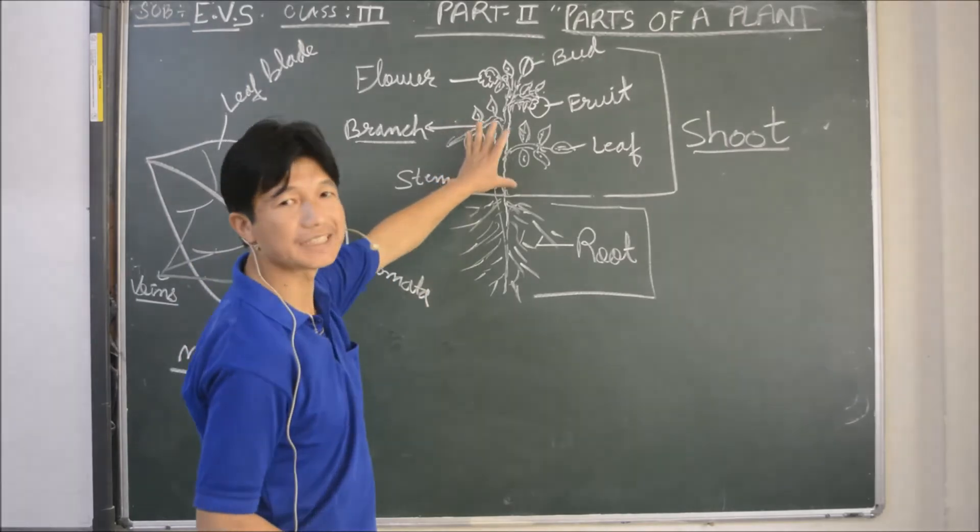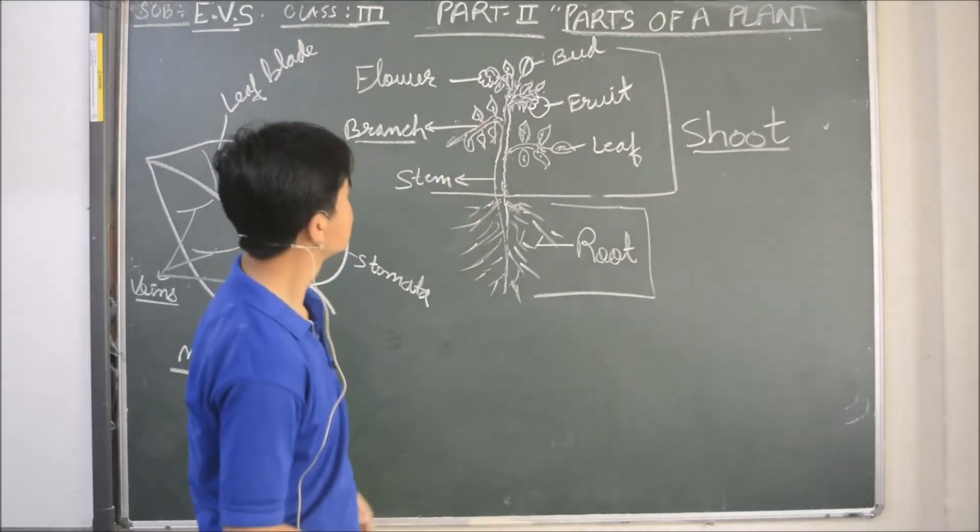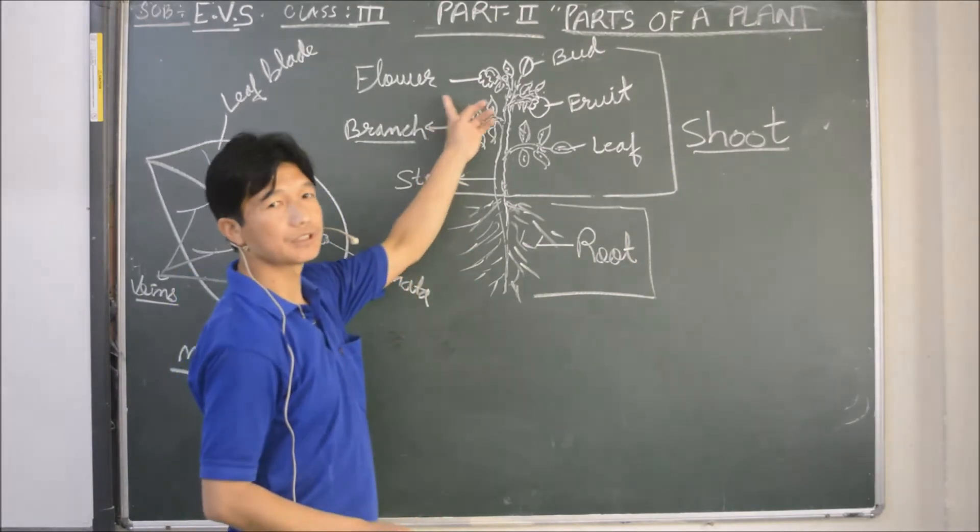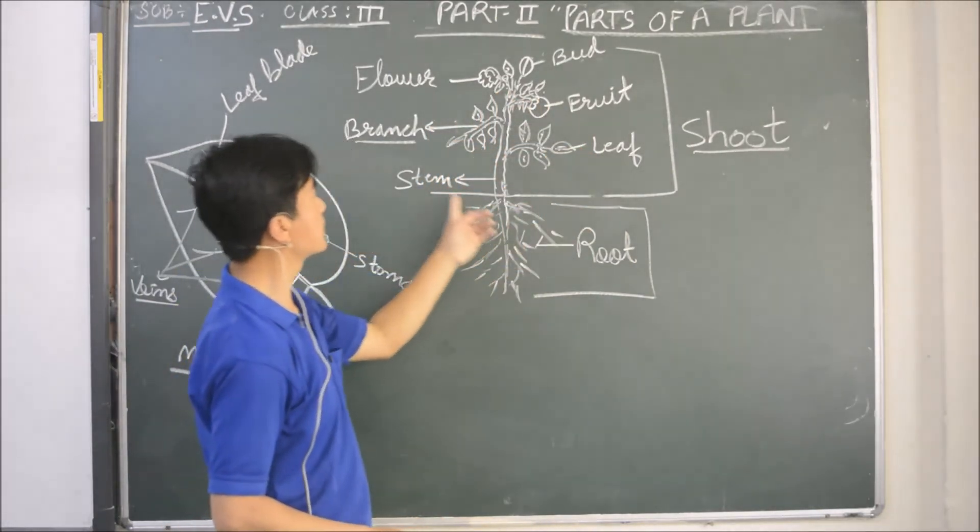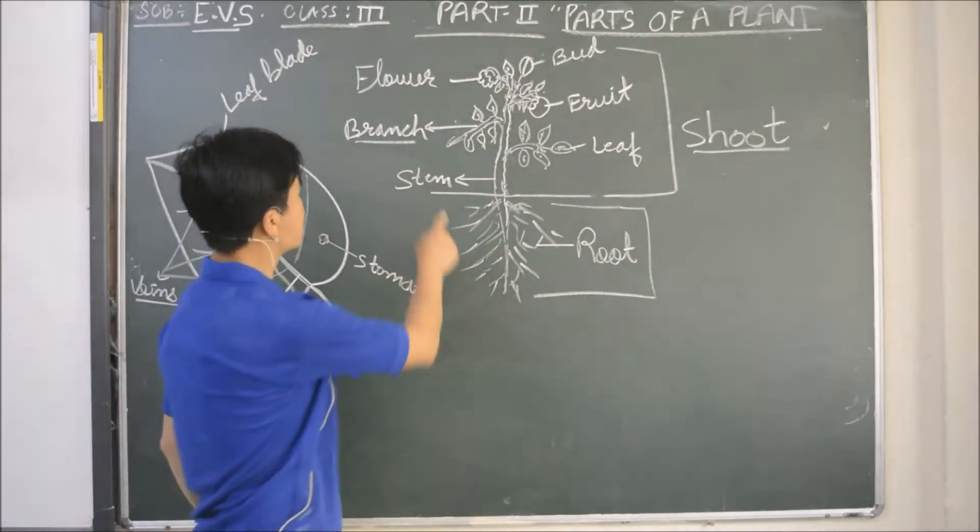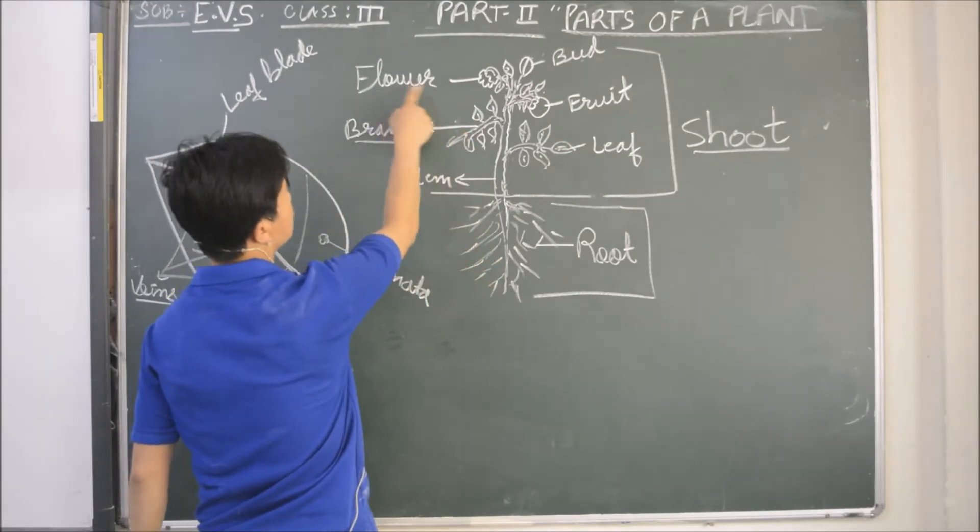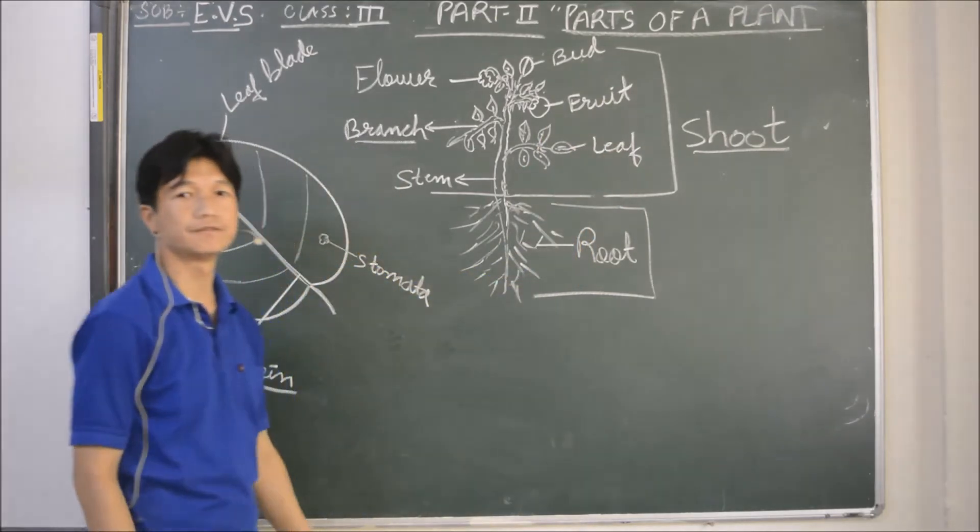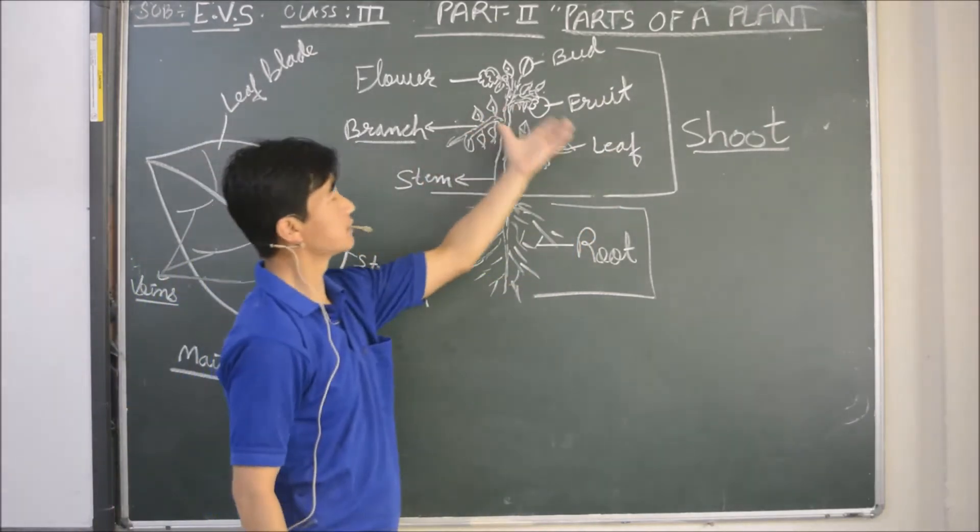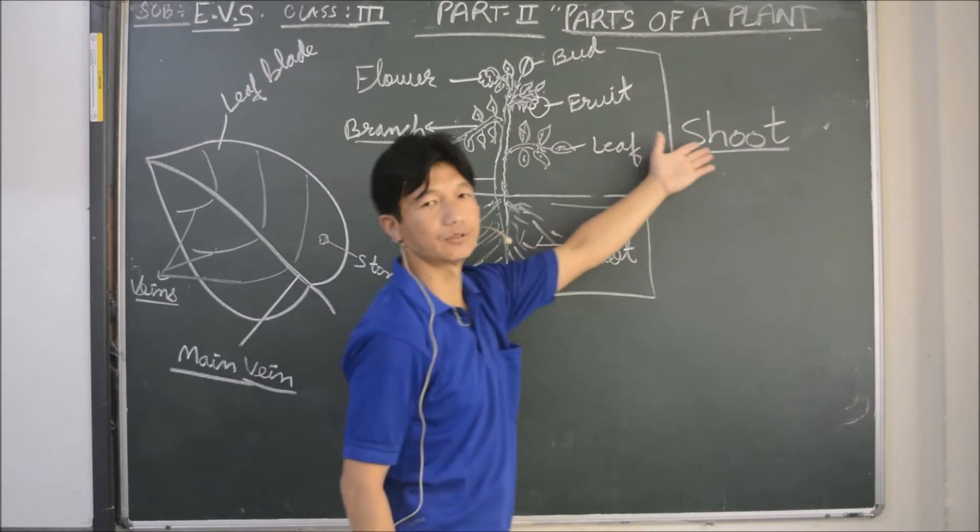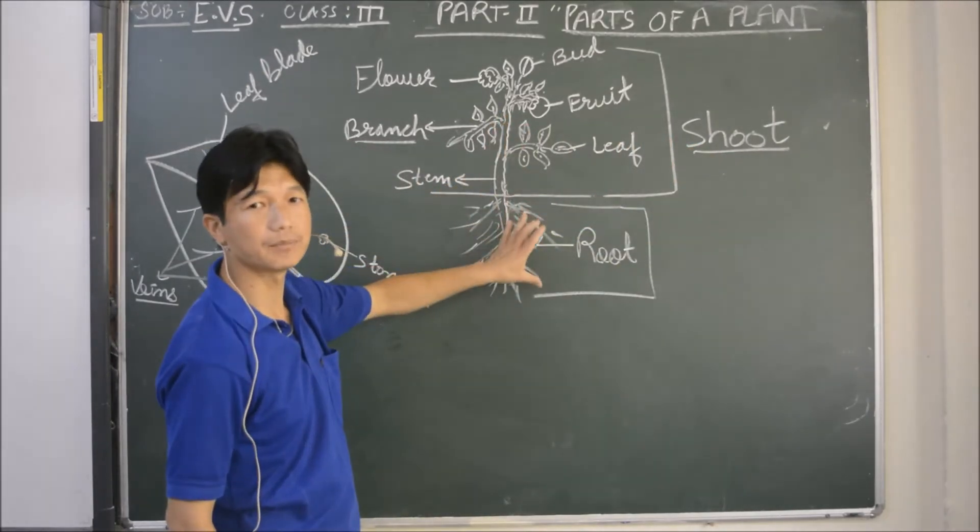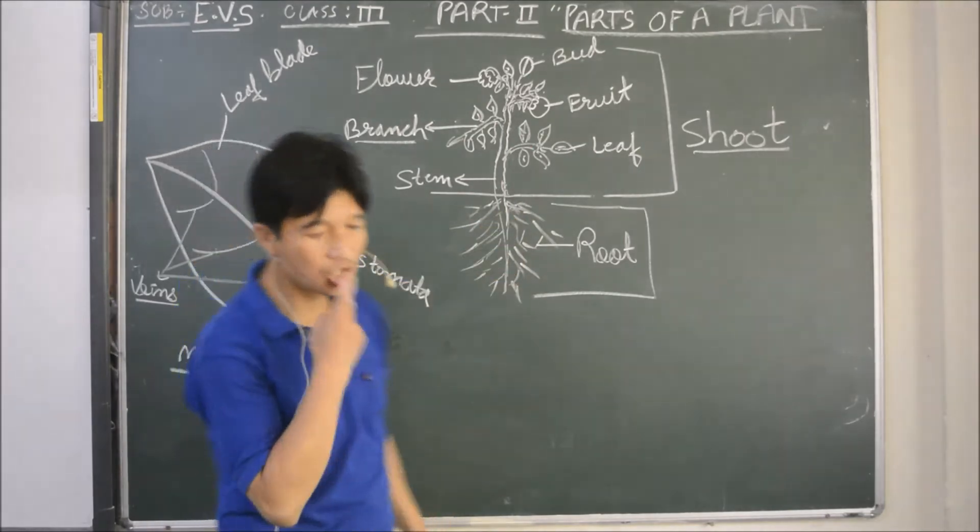And let's move on to stem, shoot. So shoots also bears different parts. They are stem, branch, flower, bud, fruit, and leaf. So these are fruit. So these are two parts of a plant. So shoots, the function of stem now.